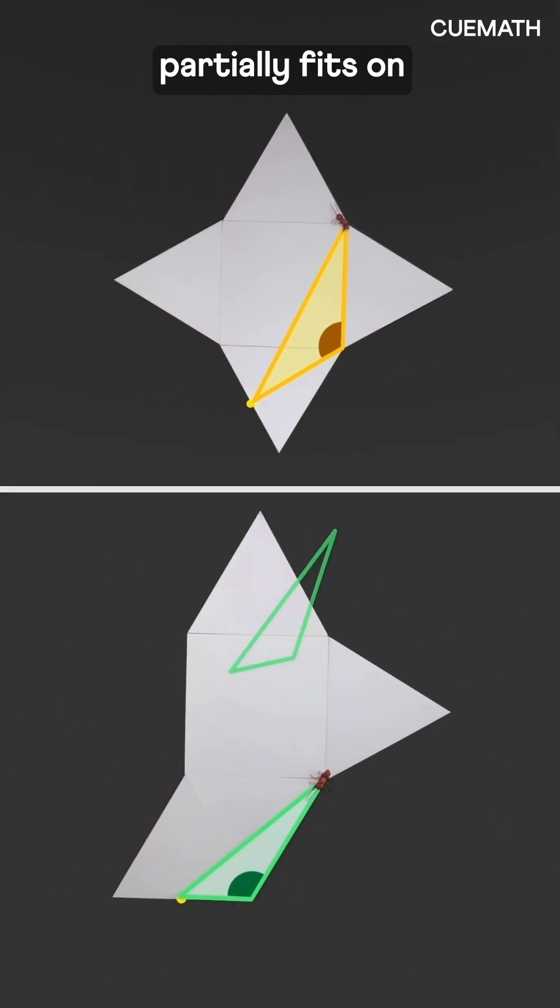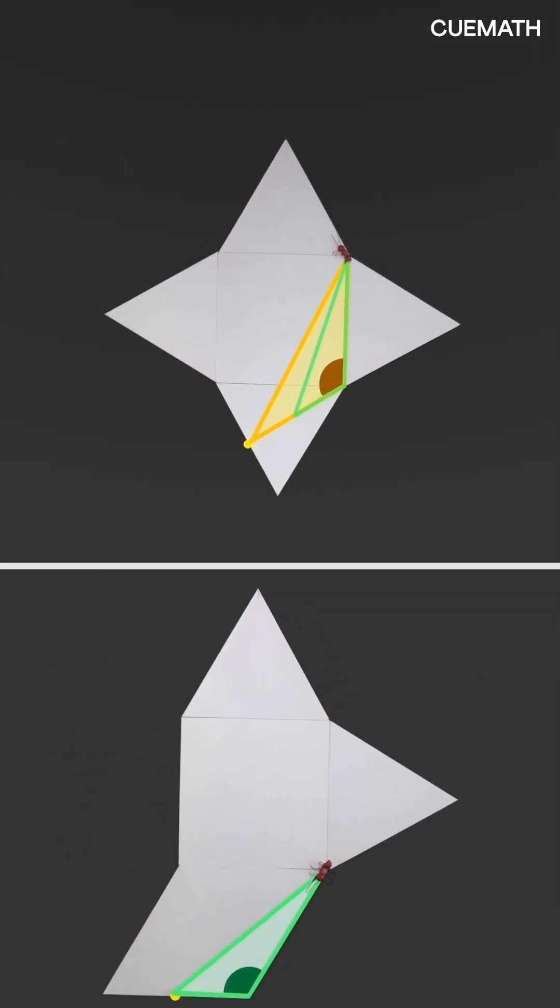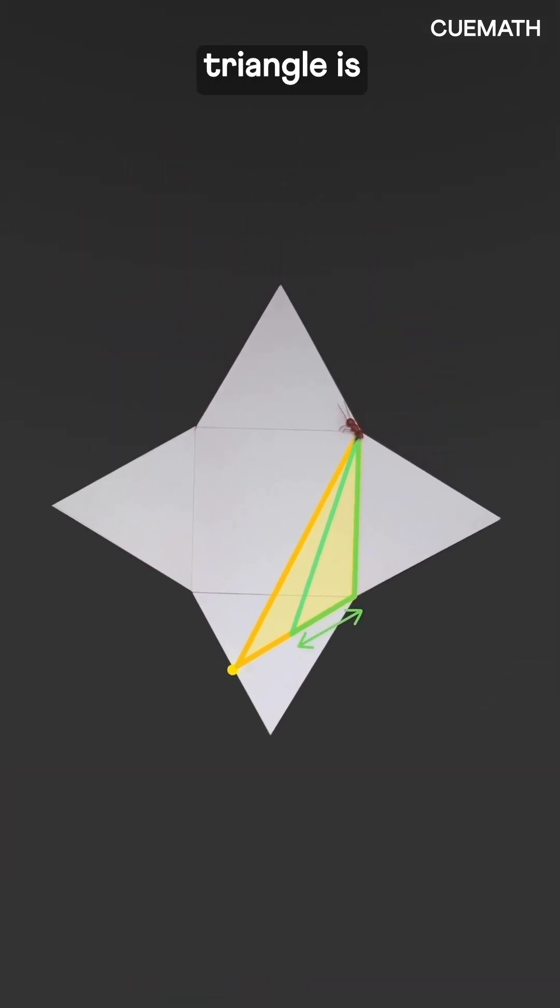So the green triangle partially fits on top of the yellow one. Since this side of the green triangle is shorter than that of the yellow one, this distance will also be shorter than this.